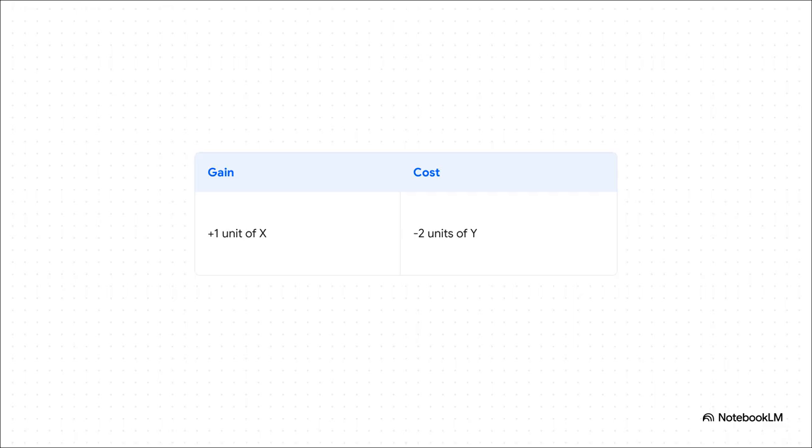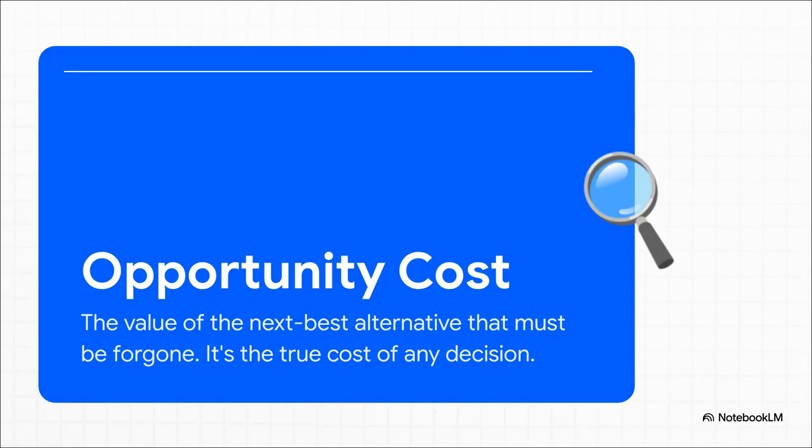But, and this is the crucial part, that extra unit of X is not free. Notice what happened when we moved over to point B. To get that one extra unit of X, we had to give up two units of Y. Our production of Y dropped from 10 all the way down to eight. That's sacrifice.